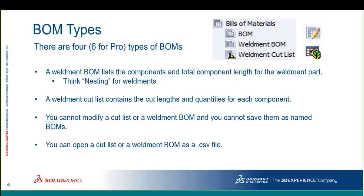The weldment and weldment cutlist are pretty tightly tied together. Here's the difference: imagine you have a two-by-two stick of steel tube and you cut it in half, giving you two four-foot pieces. The weldment cutlist would show a quantity of two, each four feet long. But the weldment bill of materials would nest all that and show you one two-by-two piece of steel totaling eight feet. The weldment BOM is what the purchaser wants — total steel needed — while the cutlist is what the welder wants to verify his count.